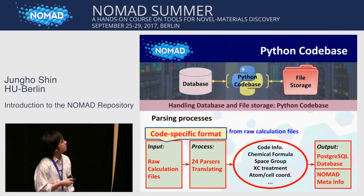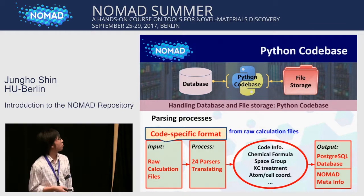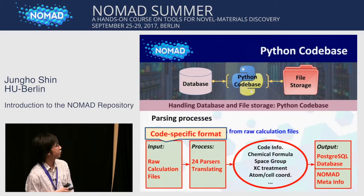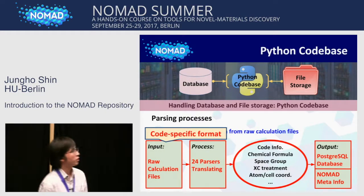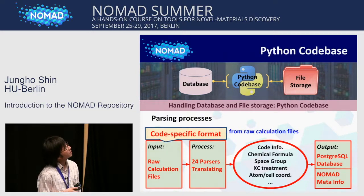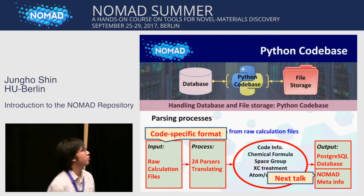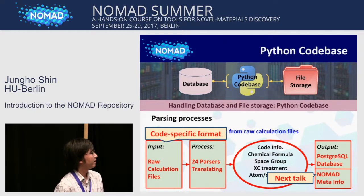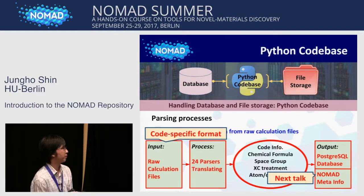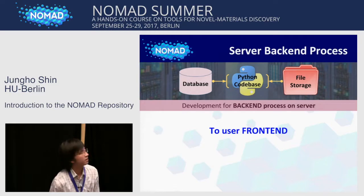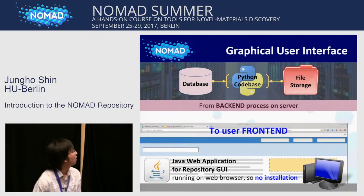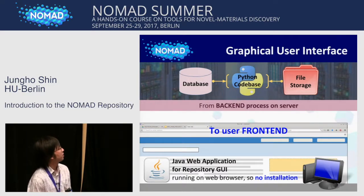Here is a simple scheme of the parsing process. The input is the raw calculation file in a code-specific format. This raw calculation file is translated by parsers, and we extract the information we want. This information is stored in our database and is visible on the web, and it also goes to the NOMAD meta-info. There will be a next talk covering NOMAD meta-info in more detail. All of these parts are done in the backend process on the server. For the user front-end, we developed a Java web application for the repository graphical user interface, running in the web browser, so no installation is required.